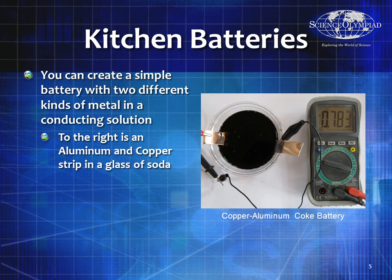A kitchen battery is any type of battery you can make from common materials you might find in the kitchen. There are a lot of acids available in kitchens you can use. To make a good kitchen battery, you need some form of electrolyte — usually something very acidic — and then you put in two different metals. Those different metals will either attract electrons or holes and form a difference in potential. Here we have copper on one side, aluminum on the other, and Coca-Cola in a cup. This single-cell battery is producing about 0.78 volts.